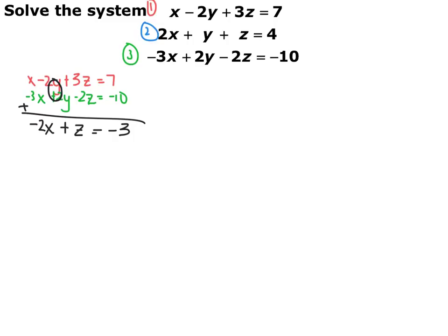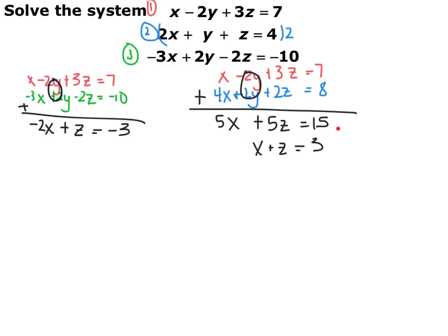Now I'm going to eliminate y from another pair of equations. I can't pick 1 and 3 again, so I'll pick 1 and 2 because they already have opposite signs on their y terms. I'll leave the first equation the same and multiply the second equation by 2 so they have opposite coefficients. First equation: x minus 2y plus 3z equals 7. Second equation multiplied by 2: 4x plus 2y plus 2z equals 8. Adding those gives 5x plus 5z equals 15. Dividing everything by 5 gives x plus z equals 3.